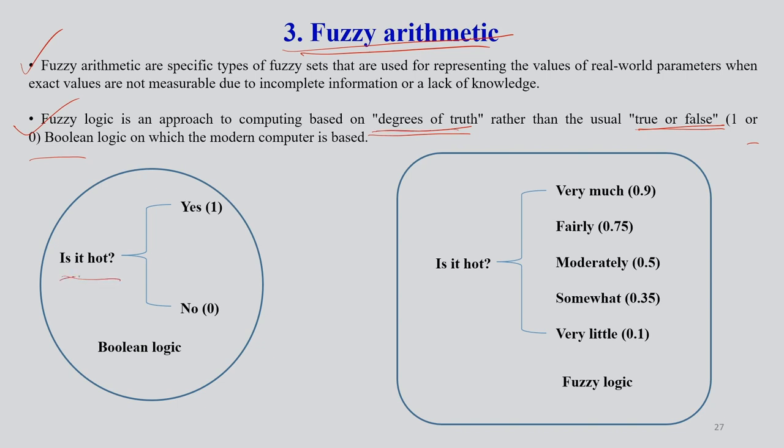Suppose a question: is it hot? There could be a binary answer, yes or no - that's how Boolean logic works in computational systems. But in case of fuzzy logic, how you answer: very much, fairly, moderately, somewhat, very little. Five different ways you're explaining this question, and this kind of system comes under fuzzy logic. This is the simplest example to see the difference between Boolean logic and fuzzy logic.